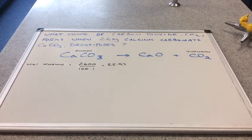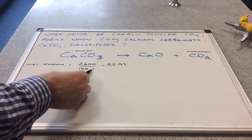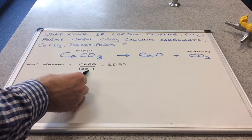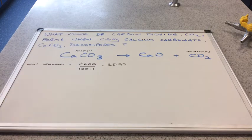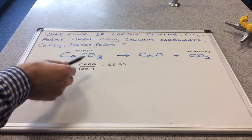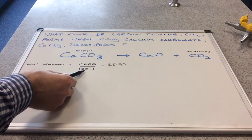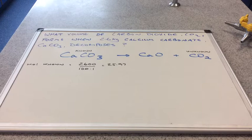So we know that we've got 2.6 kilograms. Remember the MRs are in grams per mole, so we can't have kilos and grams in the same expression, so you can see I've converted the kilograms to grams. So that's 2,600 grams divided by the 100.1, the MR of this, and that comes out at 25.97 moles.